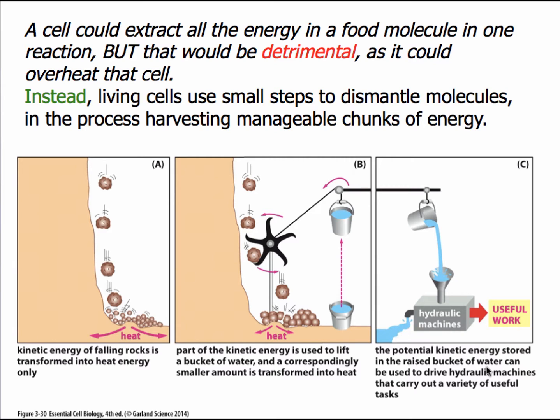Food molecules are dismantled in discrete steps, and during those steps, other pathways extract energy as the energy is liberated from the food molecules. In this example, the pinwheel takes energy from the falling rock and converts that to stored energy in the form of the bucket. The energy stored in the bucket's potential is then utilized later by the cell to drive other hydraulic machines or biochemical pathways.